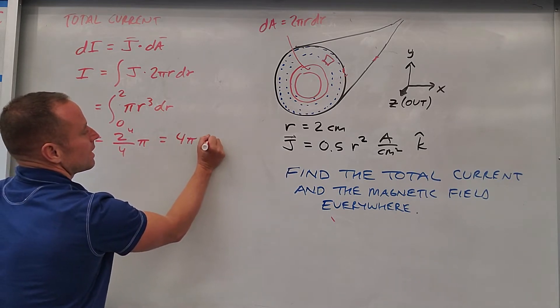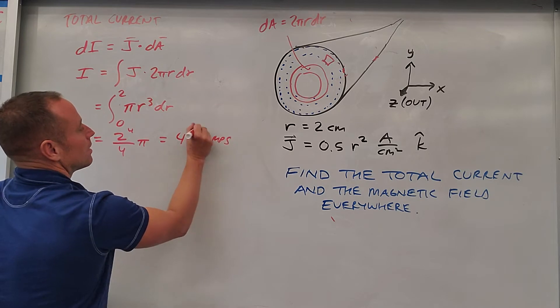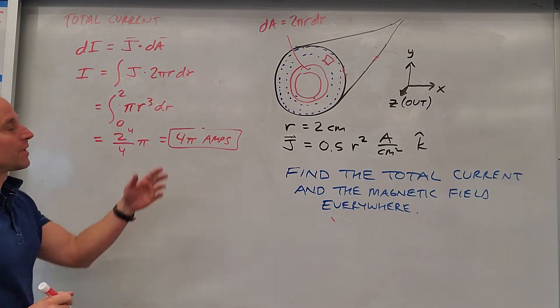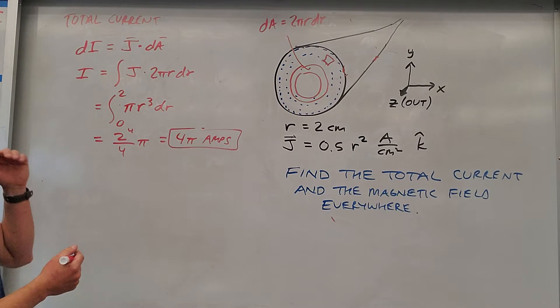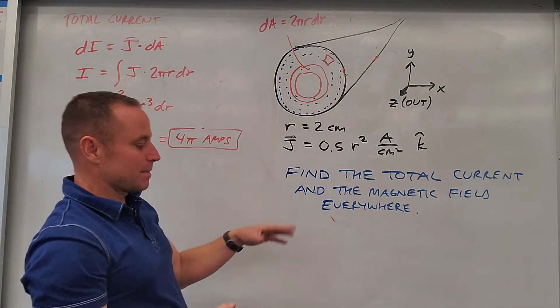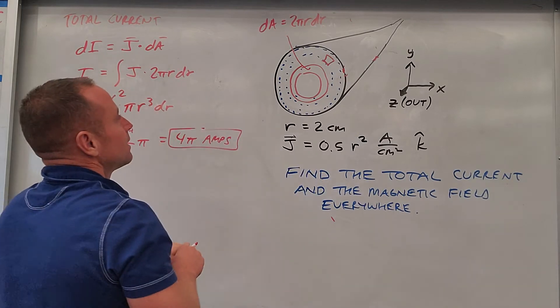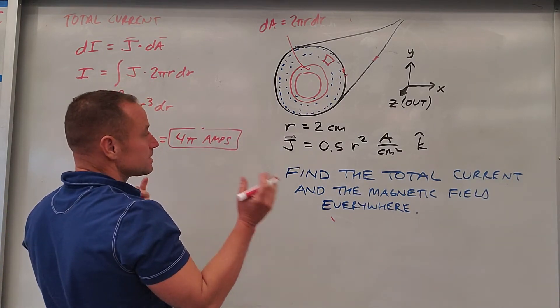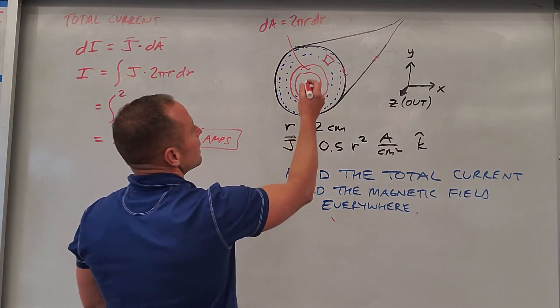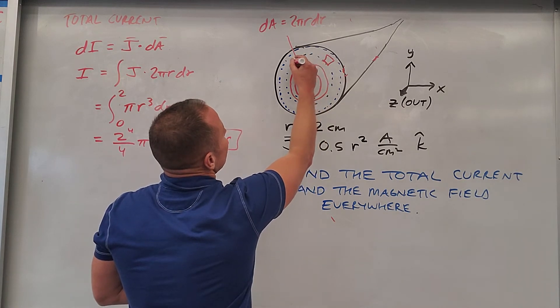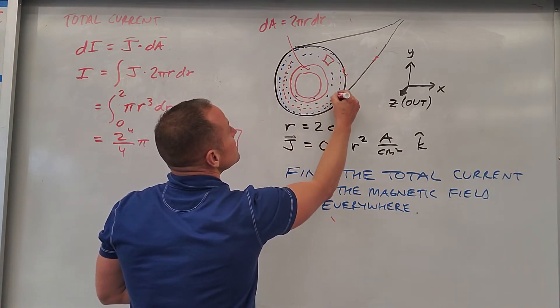So there's 4 pi amps coming at you out of that wire. So next move is we've got to get the magnetic field everywhere. And so we'll start like we did before by getting it inside the thing, and then we'll get outside.